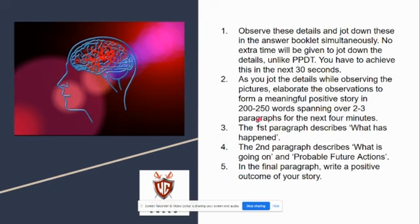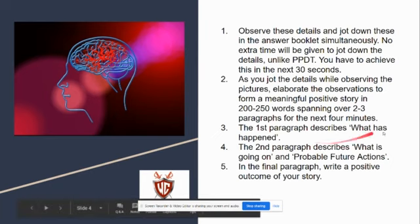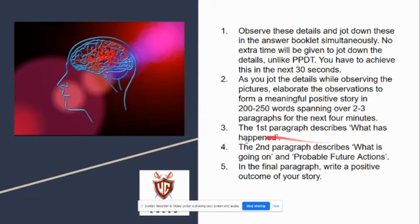Write in some 200-250 words, which should be 2-3 paragraphs for the next 4 minutes. The first paragraph describes what has happened. The second paragraph describes what is going on and probable future actions.